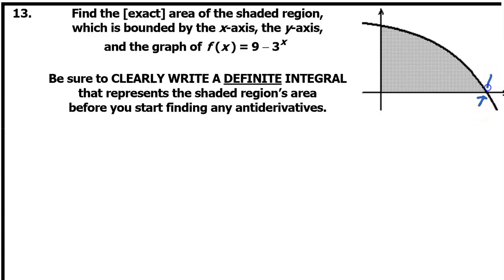So this point is where the function has a value of zero. Let's set the function equal to zero and solve. 9 minus 3 to the x power is equal to zero. Adding 3 to the x to both sides, we have 9 equals 3 to the x power.